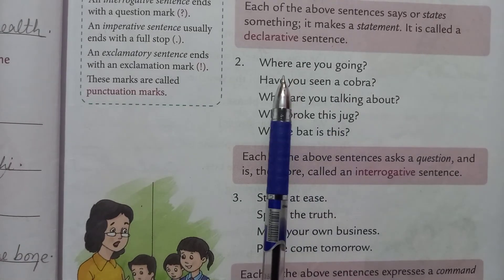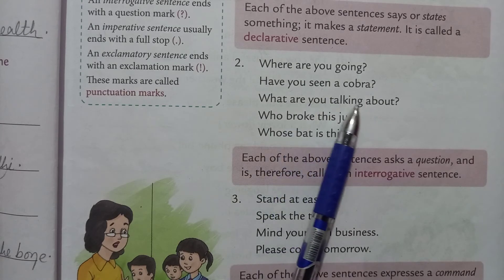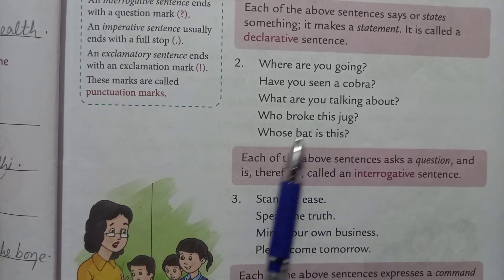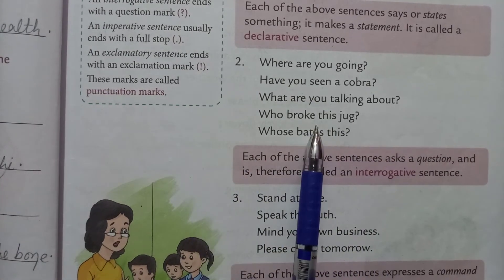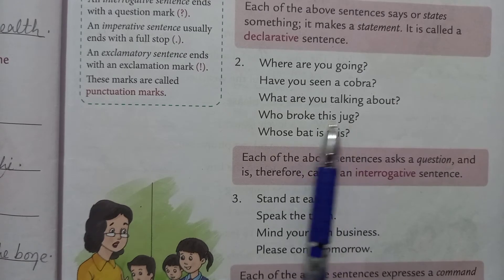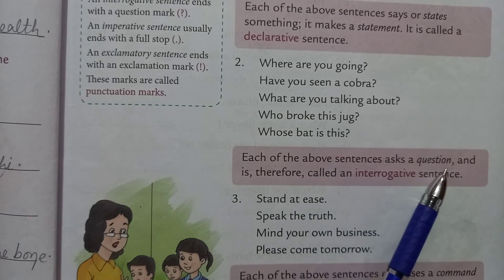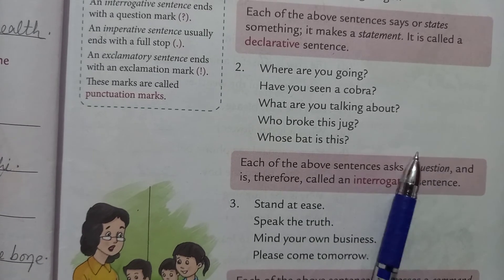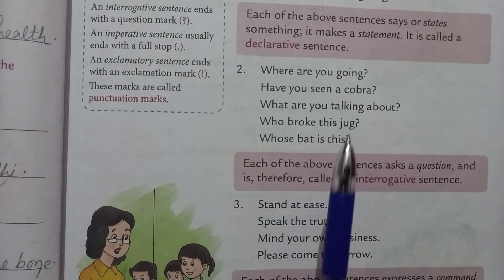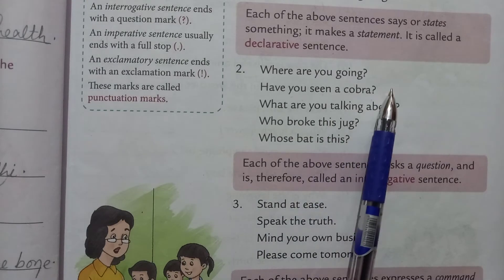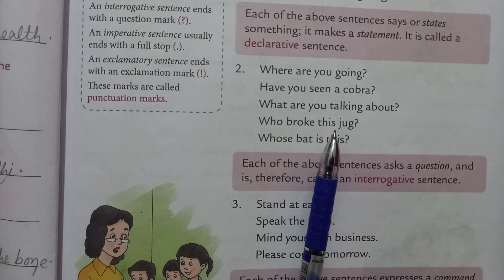Now see the second kind. 'Where are you going? Have you seen a cobra? What are you talking about? Who broke this? Whose bat is this?' These sentences are asking a question, so they are called interrogative sentences. Whenever a sentence is used for asking a question, there should be a question mark at the end. It is called an interrogative sentence.